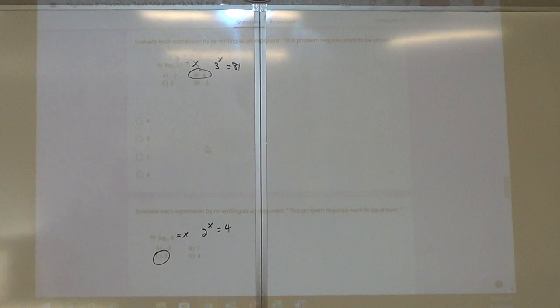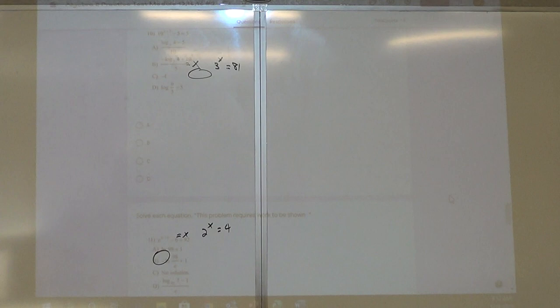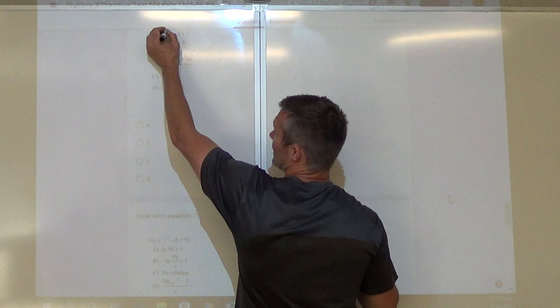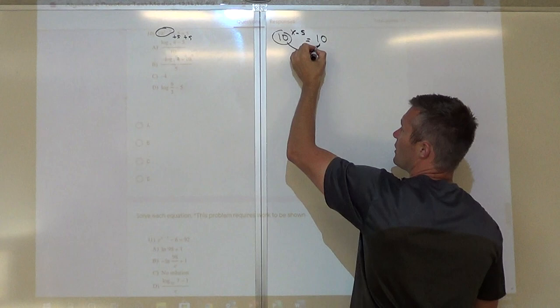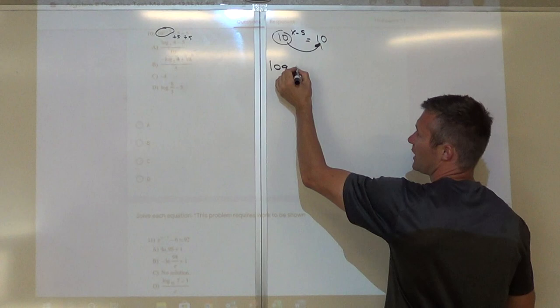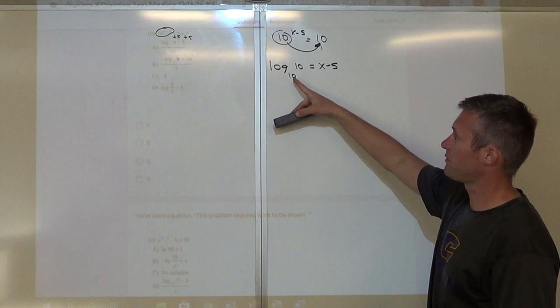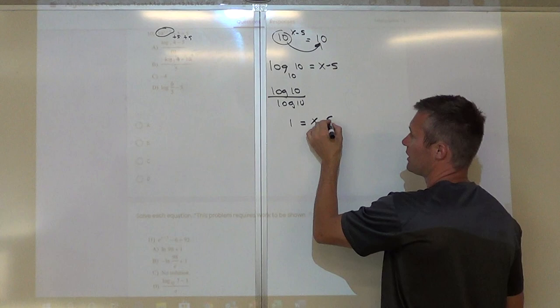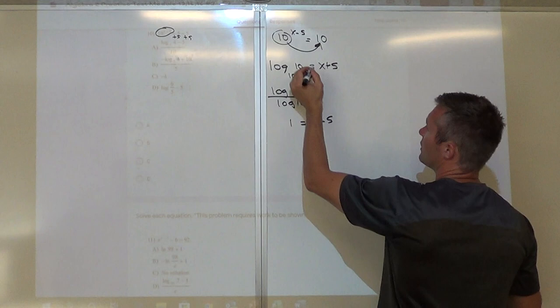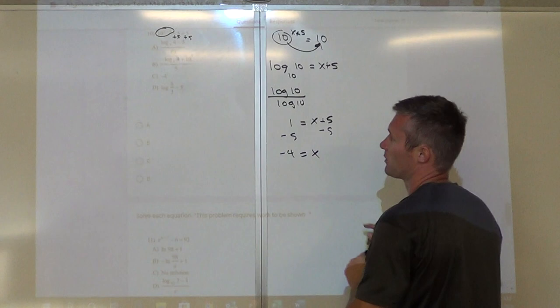On number 10, we want to simplify. Switch to exponential form first — get the exponent side by itself, so add 5. Now we have ten to the x minus 5 equals 10. Switch back to log form: log base 10 of 10 equals x minus 5. On your calculator, log base 10 divided by log base 10 equals 1. So 1 equals x minus 5; add 5, and x equals negative 4. Wait — subtract 5 gives negative 4. So x equals negative 4, answer C.